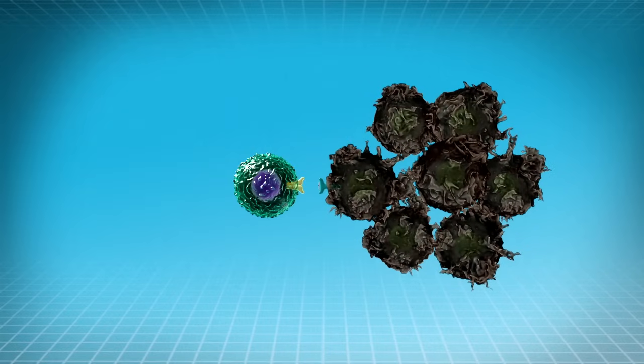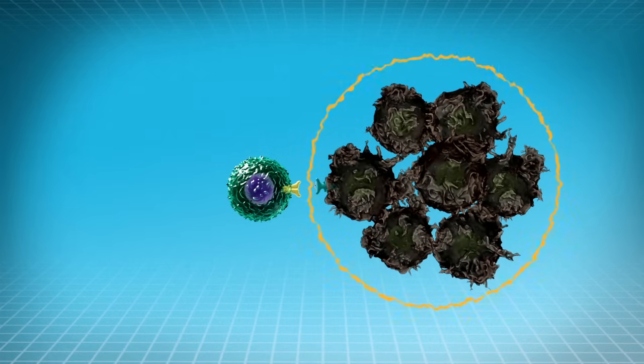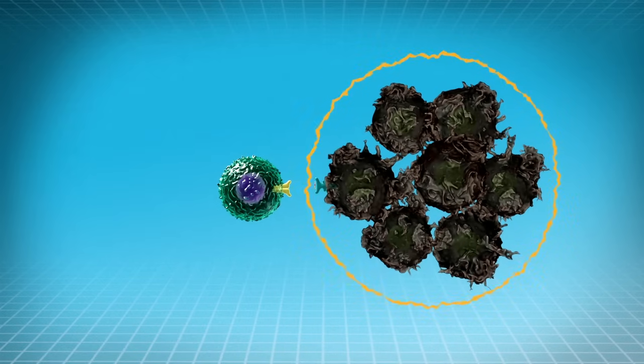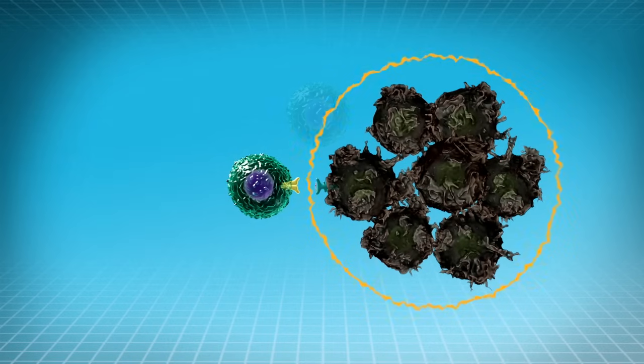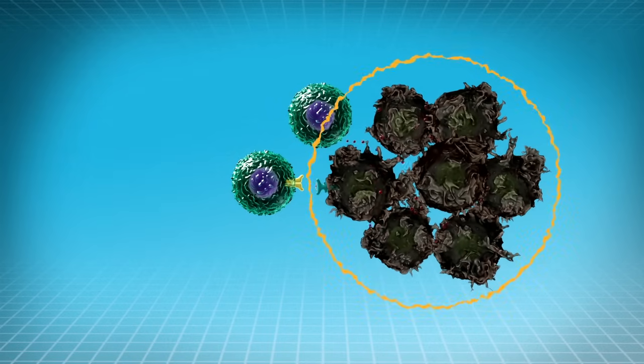Tumors, or a group of cancer cells, can build a defense network against our immune system. These defense mechanisms can either prevent the immune army from entering the tumor, or can weaken and inhibit the T cells.